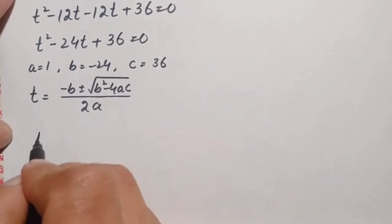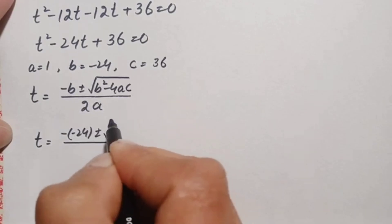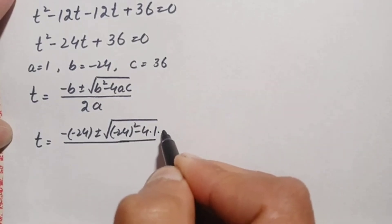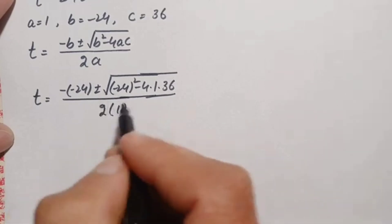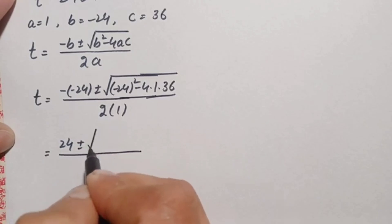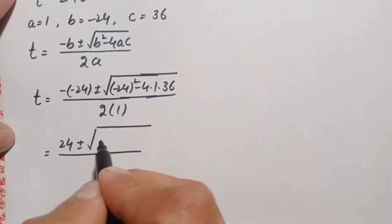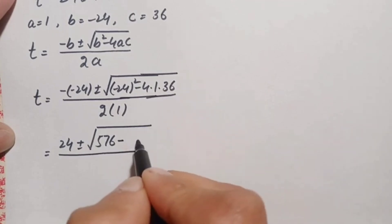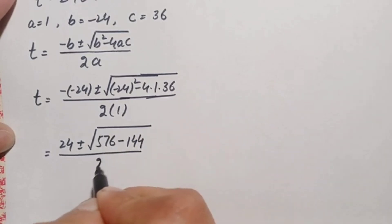Substituting the values: t equals negative of negative 24, plus or minus square root of negative 24 whole squared minus 4 times 1 times 36, divided by 2 times 1. This simplifies to: 24 plus or minus square root of 576 minus 144, divided by 2.